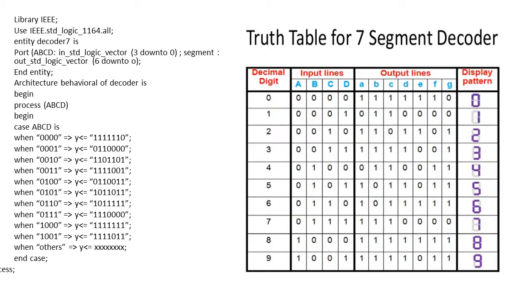Finally we will end the case, end the process statement, and end the architecture. So this is going to be the VHDL code for BCD to 7-segment decoder.